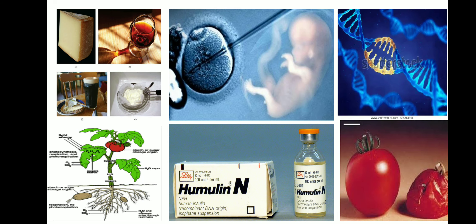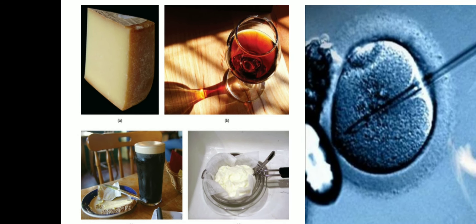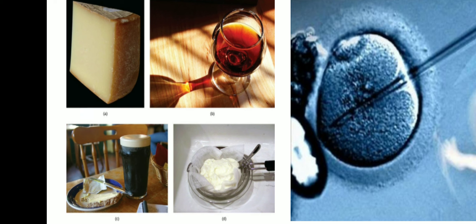The first picture shows wine, beer, bread, and yogurt. These products are produced in industry using microorganisms in fermentation processes, by which large-scale production occurs in industry for the benefits of mankind.